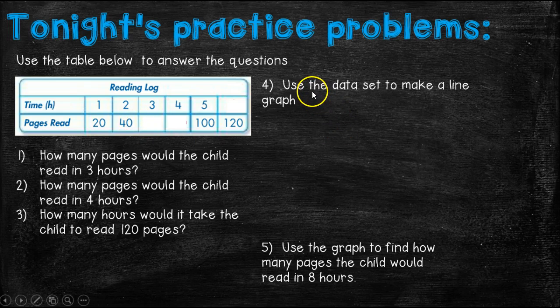Then in problem number four, you're going to go ahead and draw up that entire graph for me. And you're going to plot all of the lines and you are going to use a ruler to connect those lines. And then using those lines on that graph, you're going to find how many pages the child would read in eight hours, even though it's going to be a little bit further off of your graph. You're going to be able to figure it out by looking at the way the lines go.